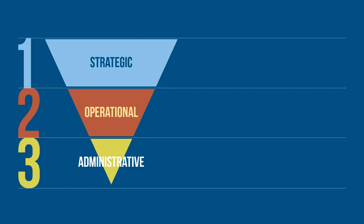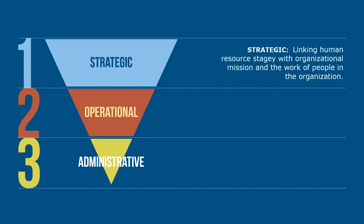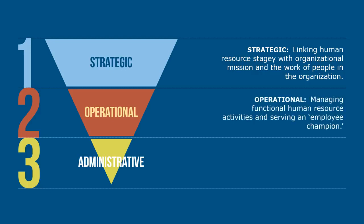The potential mix of roles is shown here. The primary role is strategic, which helps define business strategy relative to human capital and its contribution to organizational results. The strategic role helps link human resource strategy with organizational mission and the work of people in the organization. The operational and employee advocate role manages most HR activities in keeping with organizational strategy, serving as an employee champion to balance the issues of employees and employer.